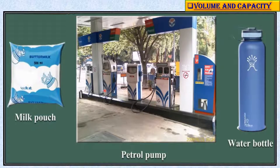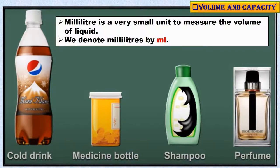Milk pouches, petrol pumps, and water bottles — we measure the quantities of liquids such as milk, petrol, and water in litres. Millilitre is the smaller unit of capacity. Small bottles such as ear drops, medicine bottles, shampoo, and perfume are measured in millilitres.